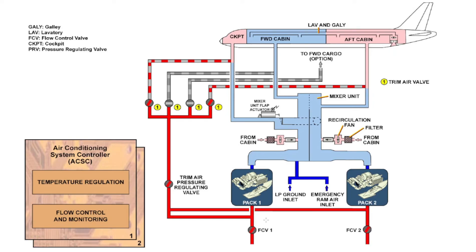On the hot air side, after the flow control valve the air comes to the trim air pressure regulating valve, and after that it gets divided into three zones: hot air for the cockpit, hot air for the forward cabin, and hot air for the aft cabin. If the optional cargo heating system is installed, there will be another valve to control the amount of hot air going into the forward cargo compartment. This is the basic layout of the system, and we will go through each component and dive deep into pack one so we can understand how the system works.